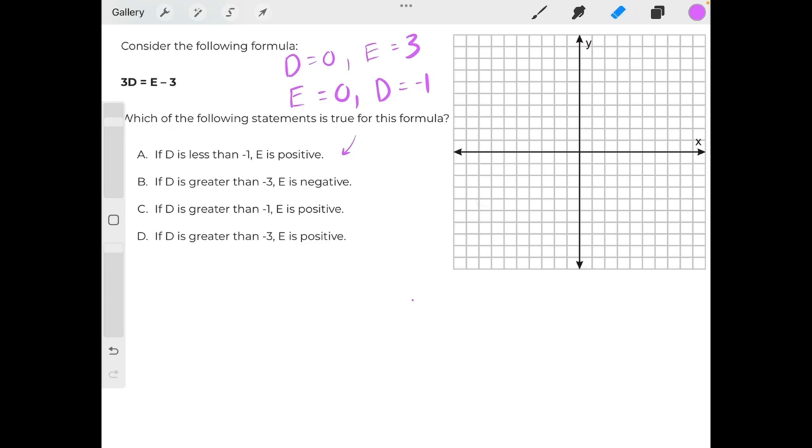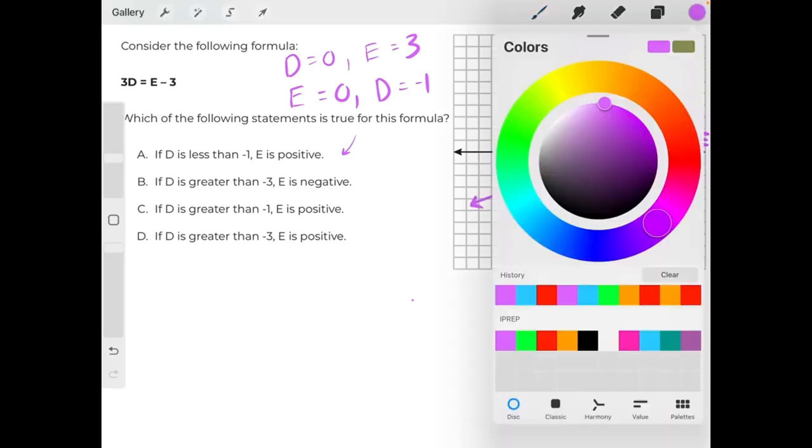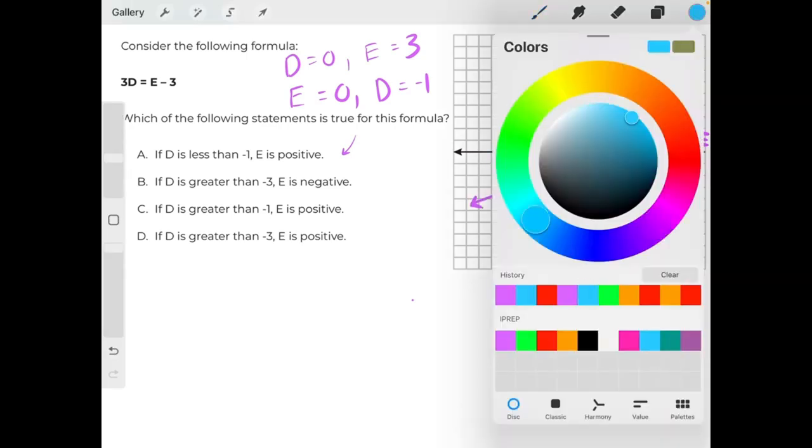Alright, for the purposes of this problem, let's call the y-axis our d-axis, and let's call the x-axis our e-axis, and plot these points. When d is 0, e is 3. When e is 0, d is negative 1. But now that we can visualize a graph, we can check each of these statements to see which ones are true and which ones are false.